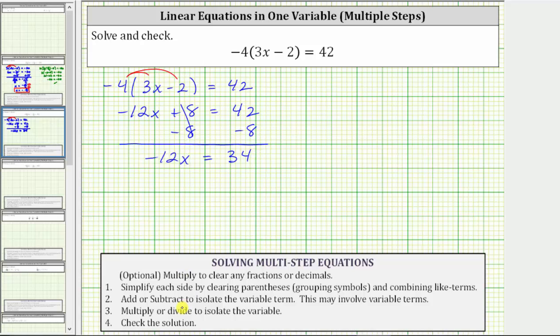The last step is to multiply or divide to isolate the variable, because negative 12x means negative 12 times x. To undo the multiplication and solve for x, we divide both sides by negative 12. Simplifying, negative 12 divided by negative 12 is one. One times x is x. We have x equals, because a positive divided by a negative is negative, x equals negative 34 twelfths.